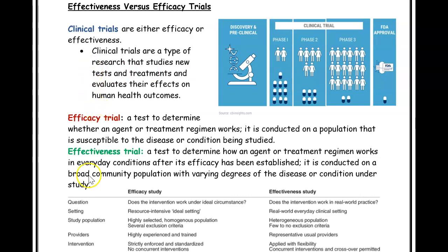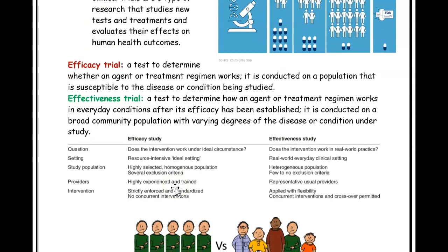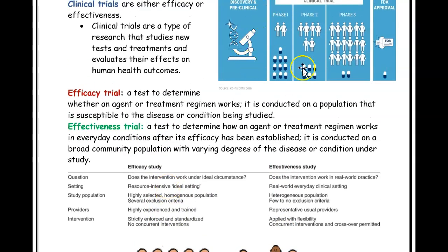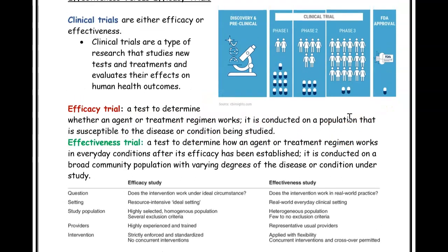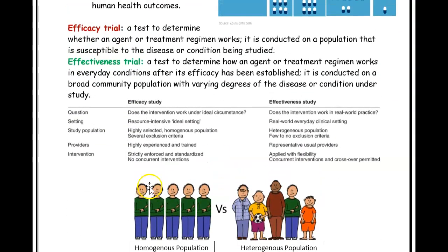So there's an efficacy trial and an effectiveness trial, and the difference between the two is listed here. An efficacy trial is when you do a test under controlled conditions, and you do these tests with only the population or only the people that you're interested in. So for example, in an efficacy trial, I do the study on a specific group of people.